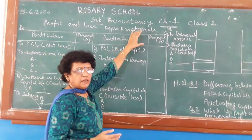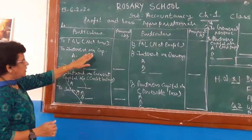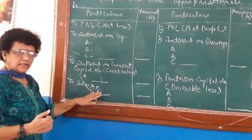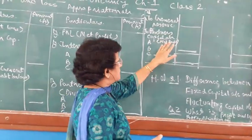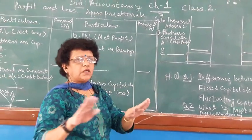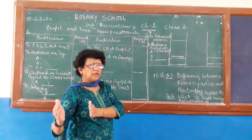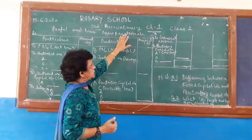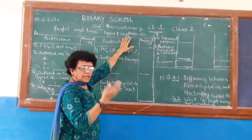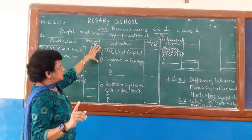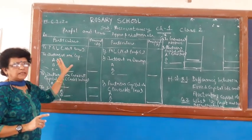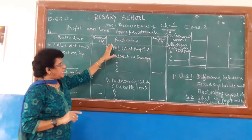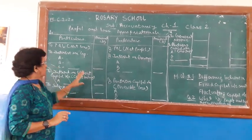The Profit and Loss Appropriation Account shows how much profit is given to each partner — either in the form of interest on capital, interest on current capital, salary, or net divisible profit. It represents the distribution and allocation of the total amount among the partners. This account is similar to the Profit and Loss Account, but the key difference is that only partner-related expenses and income to the business are recorded in the Profit and Loss Appropriation Account.